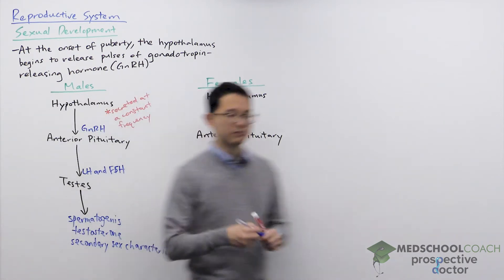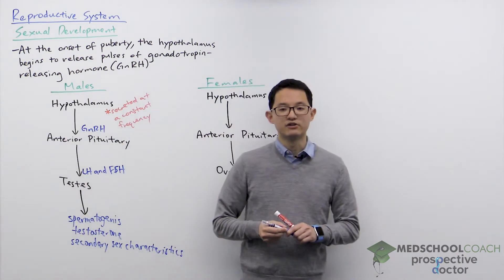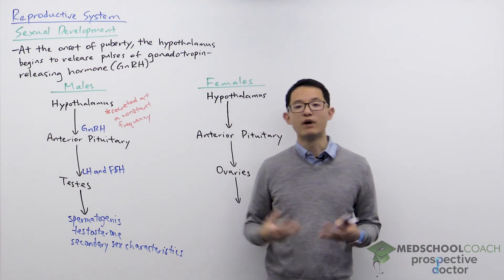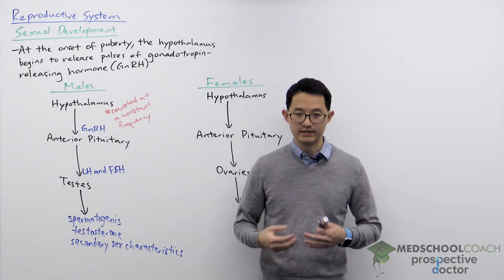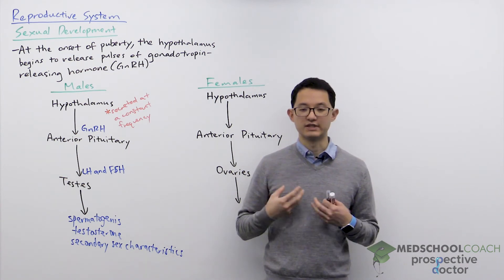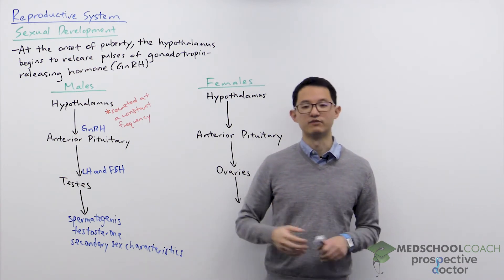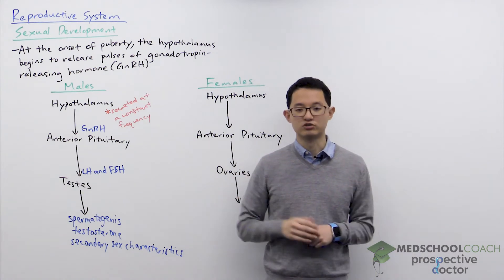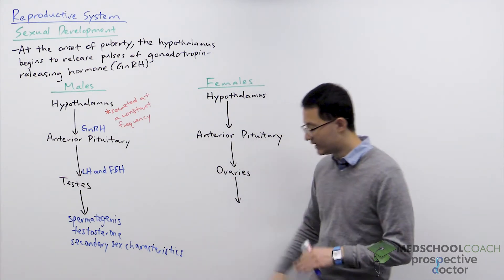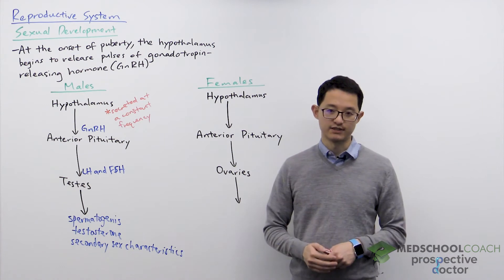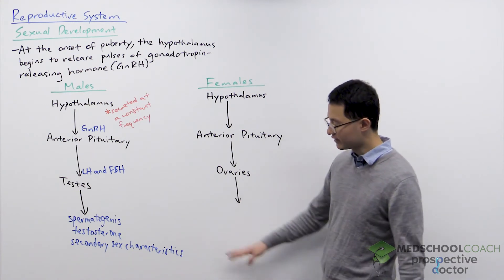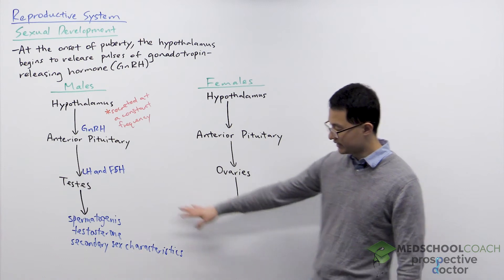During puberty, males start to undergo these changes. These include the growth of body hair in different regions of the body, enlargement of the larynx which results in a deepening of the voice, the broadening of the shoulders, and many other changes that are all secondary sex characteristics of males.